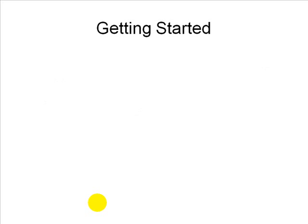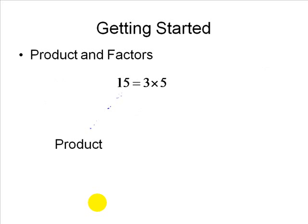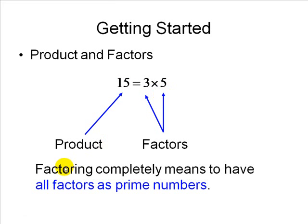Let's get started with some definitions, in particular product and factors. Let's say we have an expression 15 equals 3 times 5. We say that 15 is the product and the factors are 3 and 5. Factoring completely means to have all factors as prime numbers. In this case, 15 is broken down into factors 3 and 5. Another example is 20, which breaks into prime numbers 2 times 2 times 5. These numbers cannot be broken down any further.